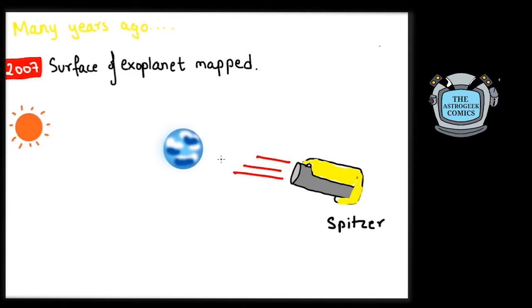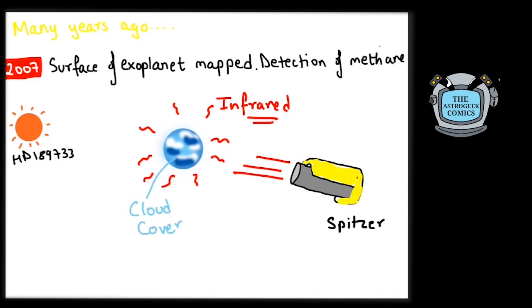The map revealed the rough temperature of the cloud cover on the exoplanet HD 189733 b using the Spitzer Space Telescope. This telescope observed infrared radiation which was ideal for such things. We also found an organic compound for the first time in an exoplanet when methane was detected in this very same exoplanet HD 189733 b.